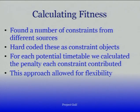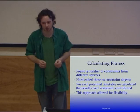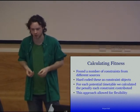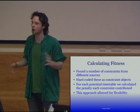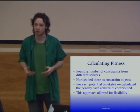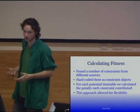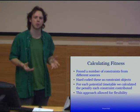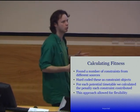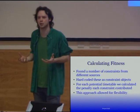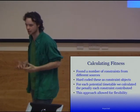We hard-coded these constraints as constraint objects, and for each potential timetable we calculated the penalty each constraint contributed. This approach allows other constraints to be added at a later date. An example of constraints is, obviously, no two practicals can clash with each other — you can't be in two places at the same time. You don't want a practical to be overfilled its capacity, and you wouldn't want a practical with only one person in it, because that would be quite boring.